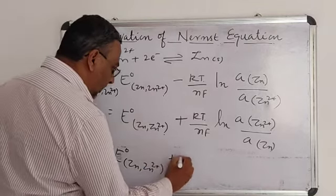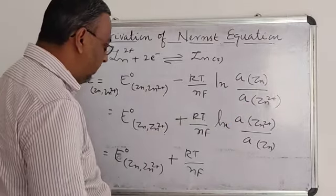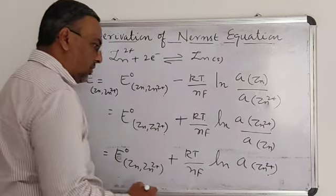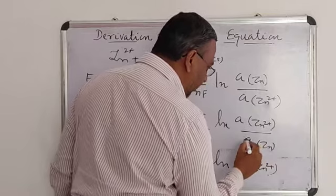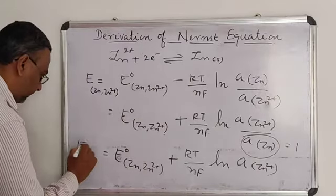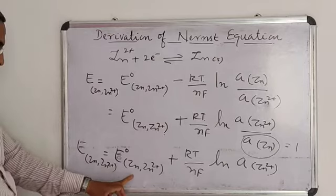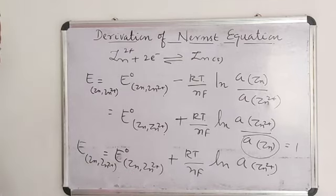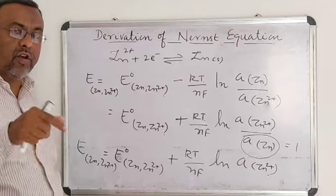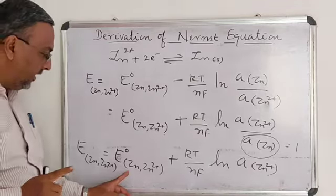If we change the sign, the numerator becomes the denominator and the denominator becomes the numerator — that is, ln of activity of Zn²⁺. Since zinc is a solid, its activity is equal to 1. This gives the EMF of Zn²⁺/Zn. The standard electrode potential applies when a zinc electrode is in contact with a solution of unit concentration at 25°C.